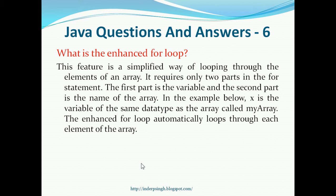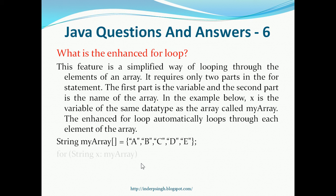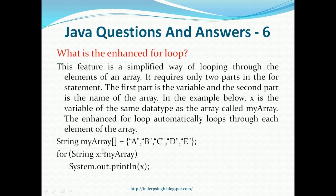Question 6 discusses the enhanced for loop. This is a simplified way of looping through the elements of an array. It requires only two parts in the for statement: the first part is the variable and the second part is the name of the array. For example, x is the variable of the same data type as the array called myArray. The enhanced for loop automatically loops through each element of the array. So we have string myArray with five elements: a, b, c, d, and e. The enhanced for loop says for string x in myArray, system.out.println x.